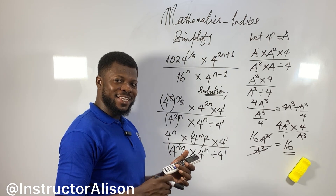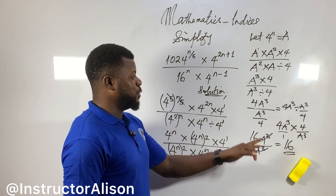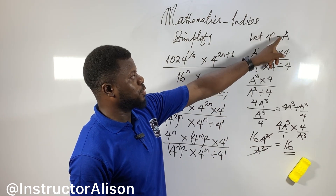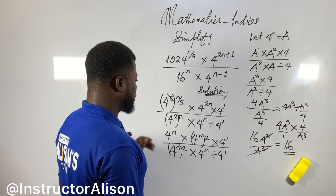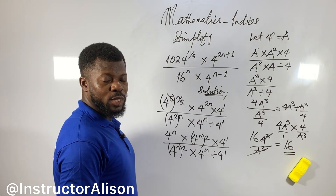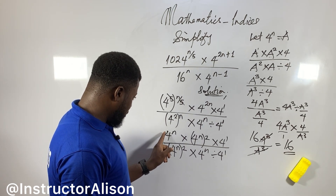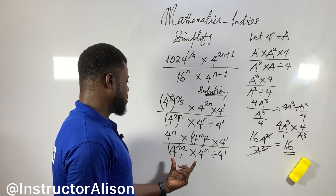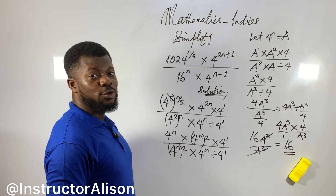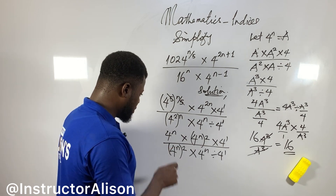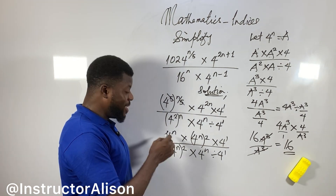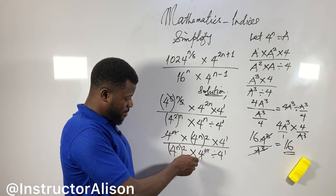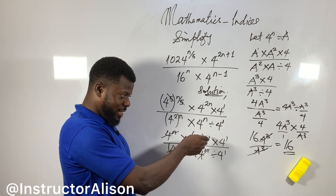Check out the steps step by step. If you don't want to use the substitution method where we let 4^n equal a, you can instead decide to factorize. From that same expression, you factorize 4^n out as a common factor throughout. Either method will work for you — try it out.